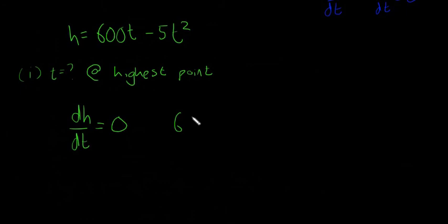So for dh dt is going to be 600 minus, no, it's minus 10t is equal to zero. 600 is equal to 10t, and that'll give us the t is equal to 60 seconds.